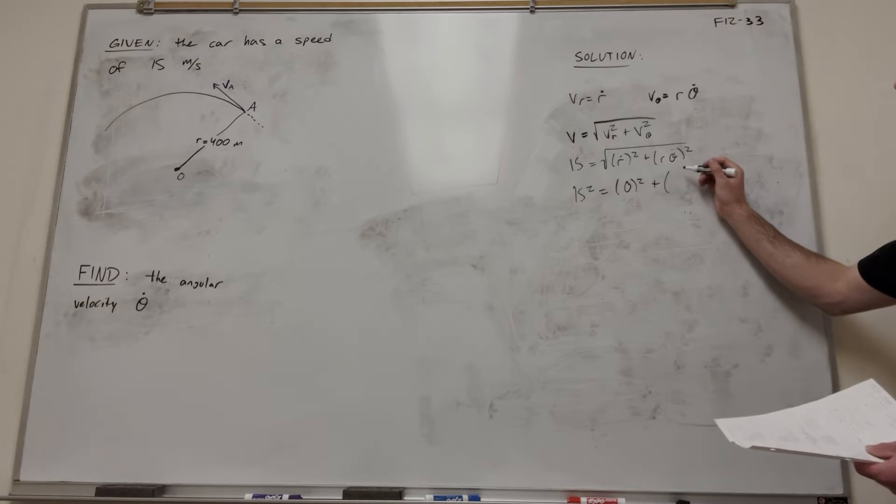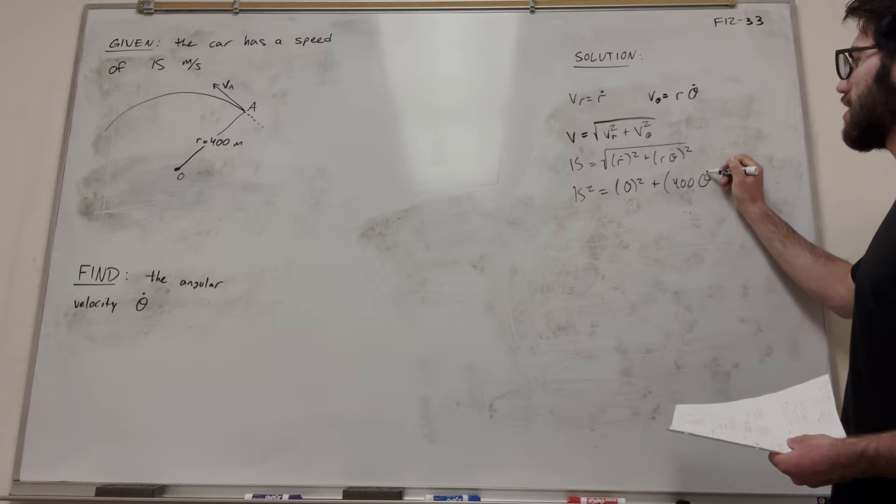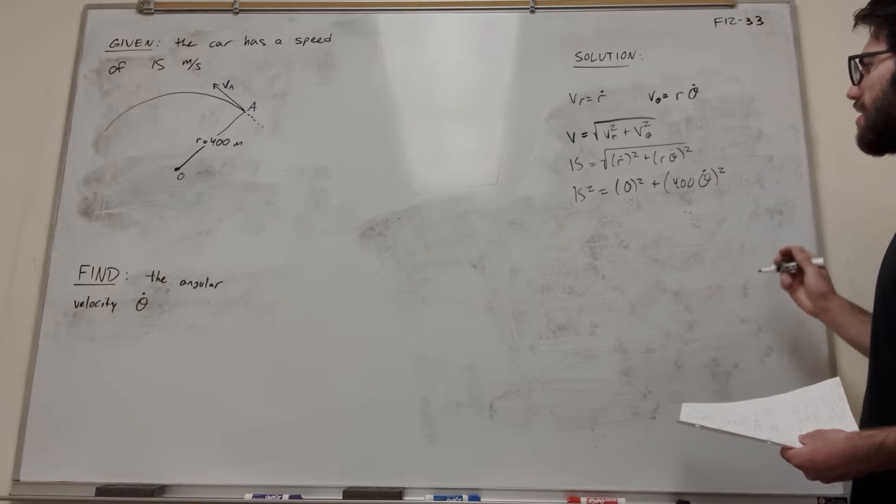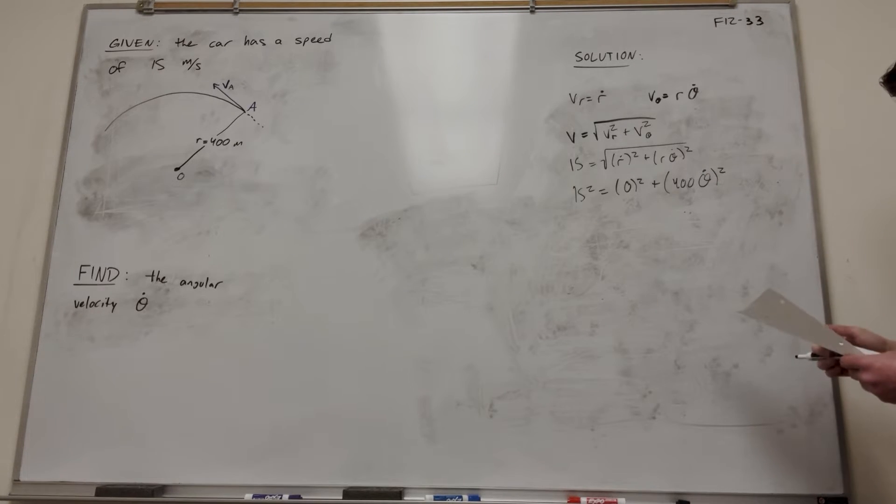So then here, we have radius is 400, and then theta dot. We haven't solved for that yet.